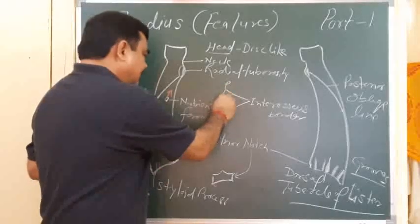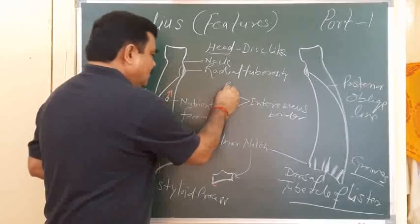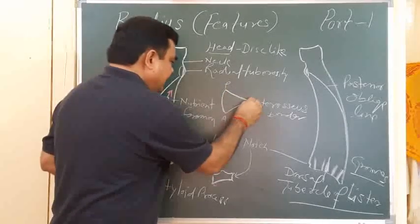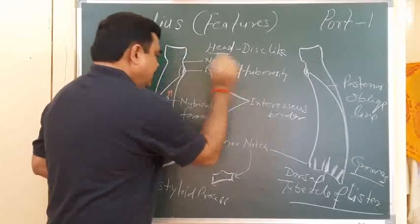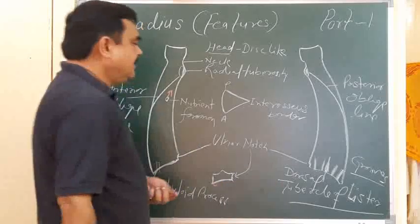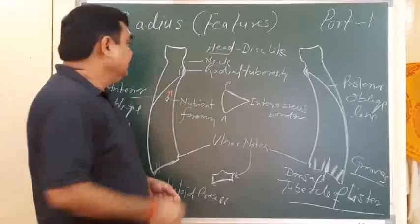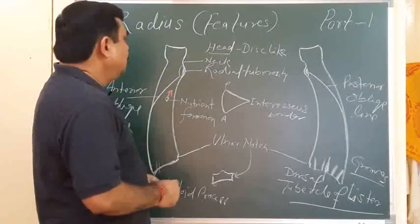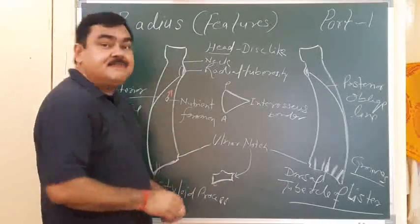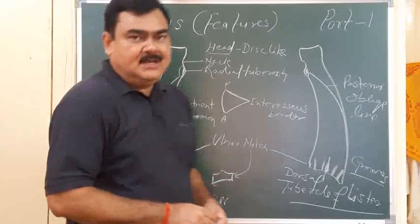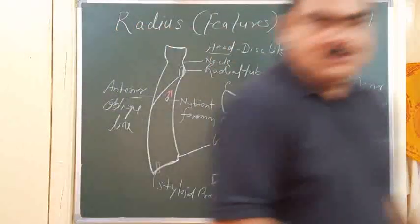The shaft also has a lateral surface and a posterior surface. So the shaft has three surfaces and three borders. This is all about the features of the radius.